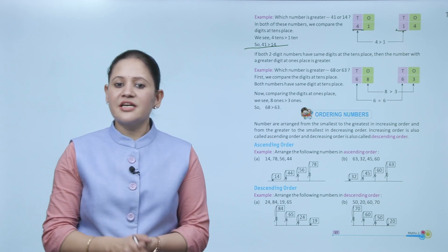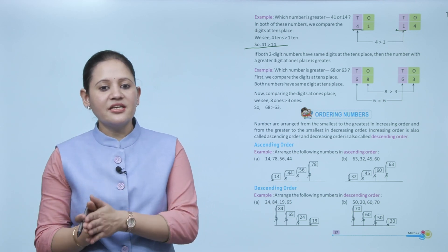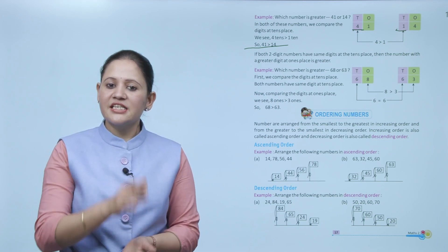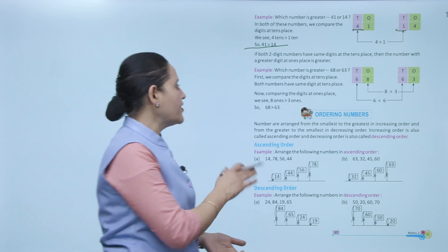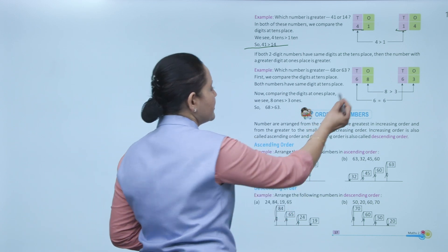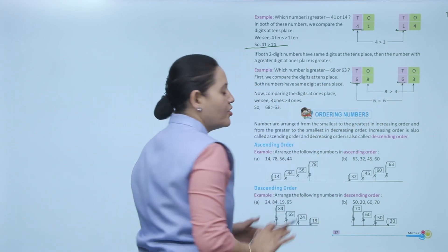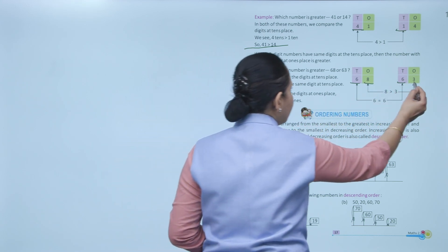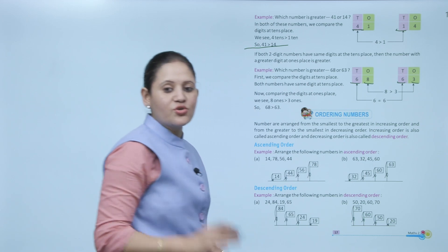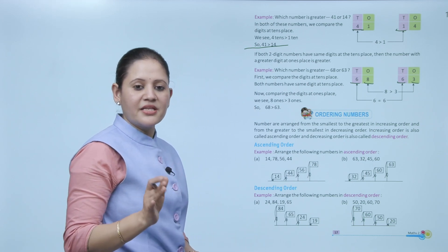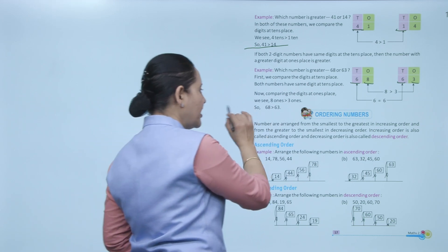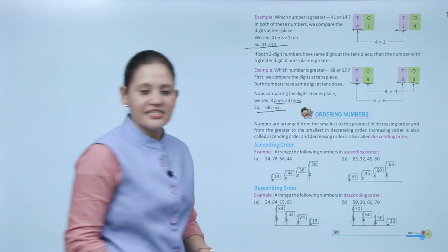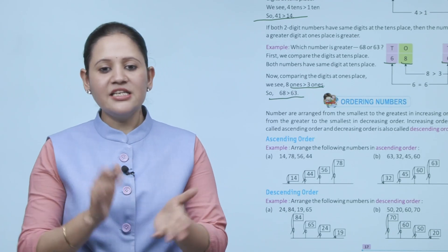If both two-digit numbers have the same digit at the tens place, the number with the greater digit at the ones place is greater. For example, which is greater — 68 or 63? Tens place: both have 6, so they are equal. Compare ones place: 8 versus 3, so 8 is greater than 3, therefore 68 is greater than 63. This way we can compare any two numbers.